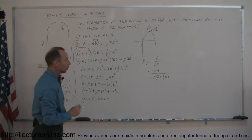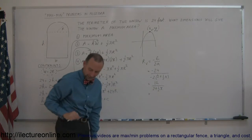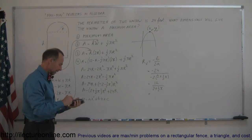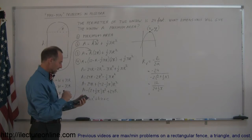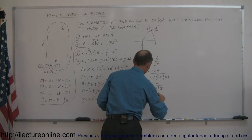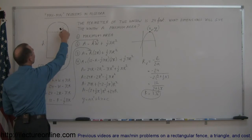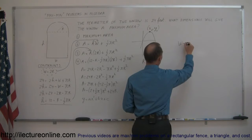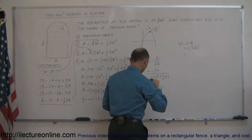The minus signs cancel, so this becomes equal to 12 divided by (2 plus one-half pi). Using a calculator: pi divided by 2 plus 2, divided into 12, gives approximately 3.36. Since the perimeter was in feet, the radius of this window should be 3.36 feet. Now we can find the width, because width is twice the radius: width equals 2 times 3.36, which is 6.72 feet.